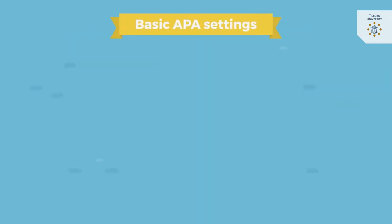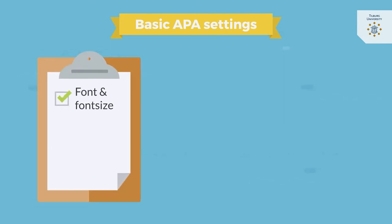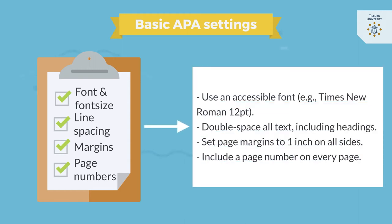The basic APA settings include instructions on font and font size, line spacing, margins and the use of page numbers. Here you can see the basic settings you should use for your paper.